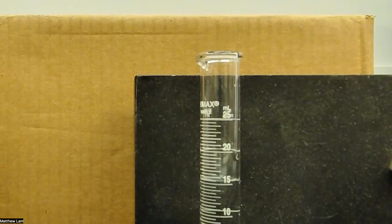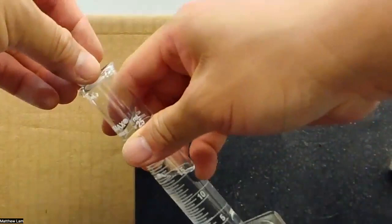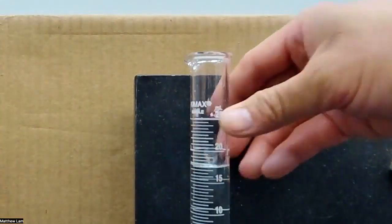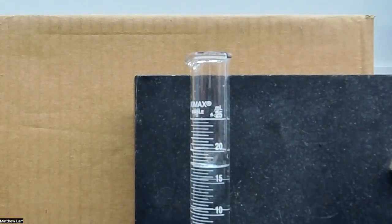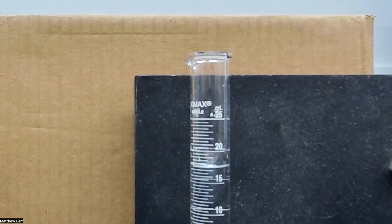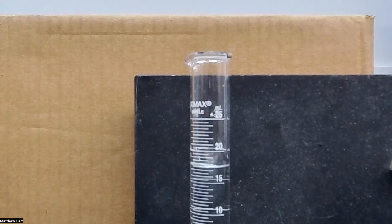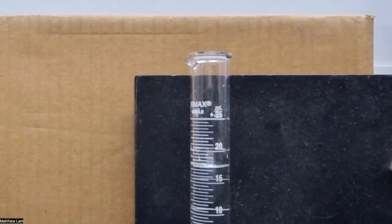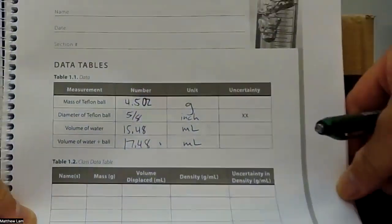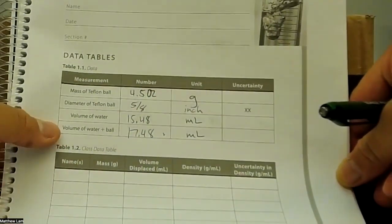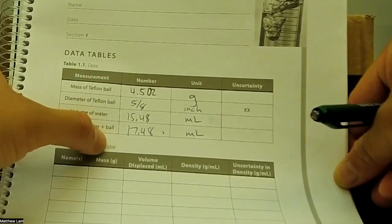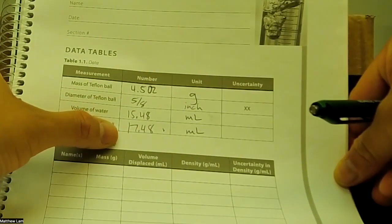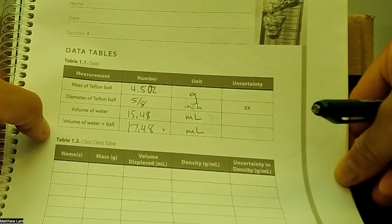And so now I'm going to add in the Teflon ball carefully. You don't want to drop it because you don't want to spill the water, and then we're going to measure it after. So it looks like after, the volume looks like it's about 16, 17, 17.48 mils. And so after I put that in, you now determine the volume of the Teflon ball with water in the graduated cylinder.